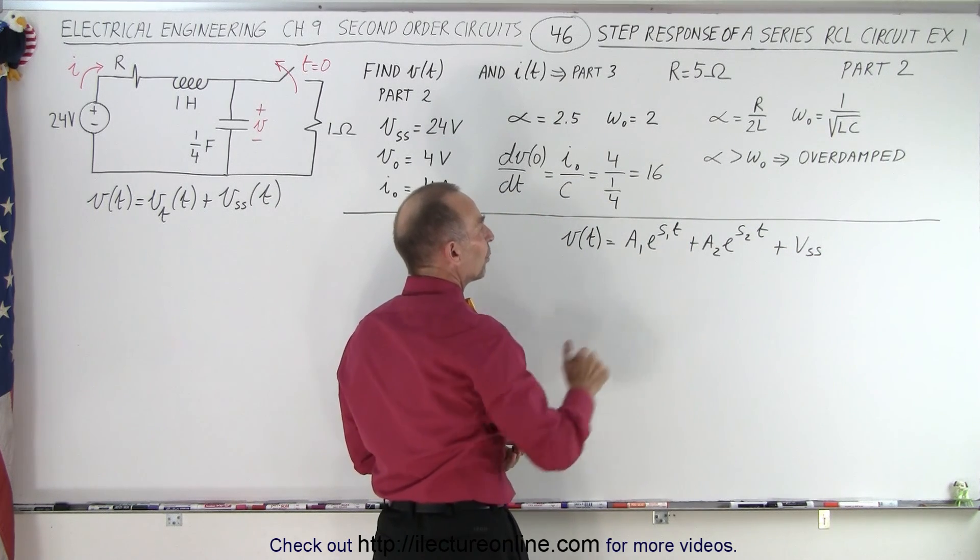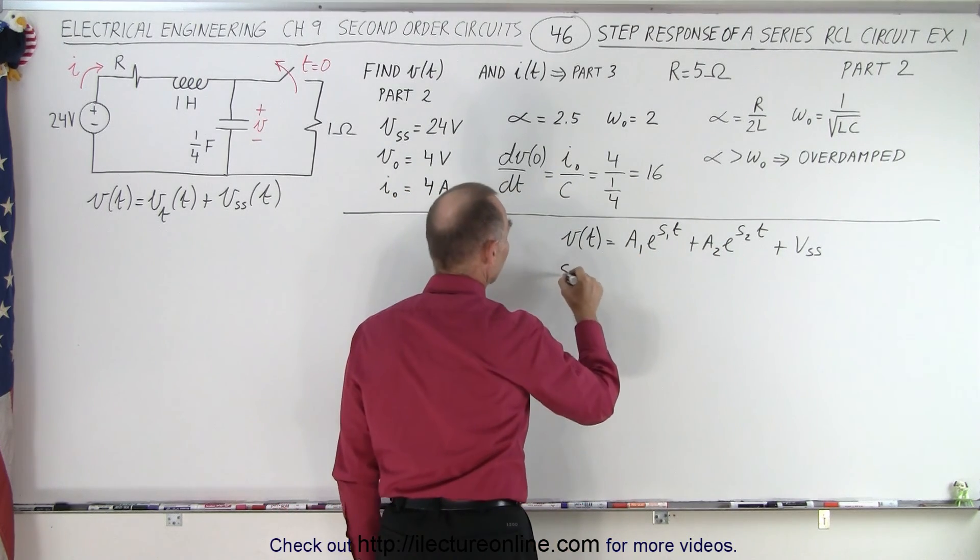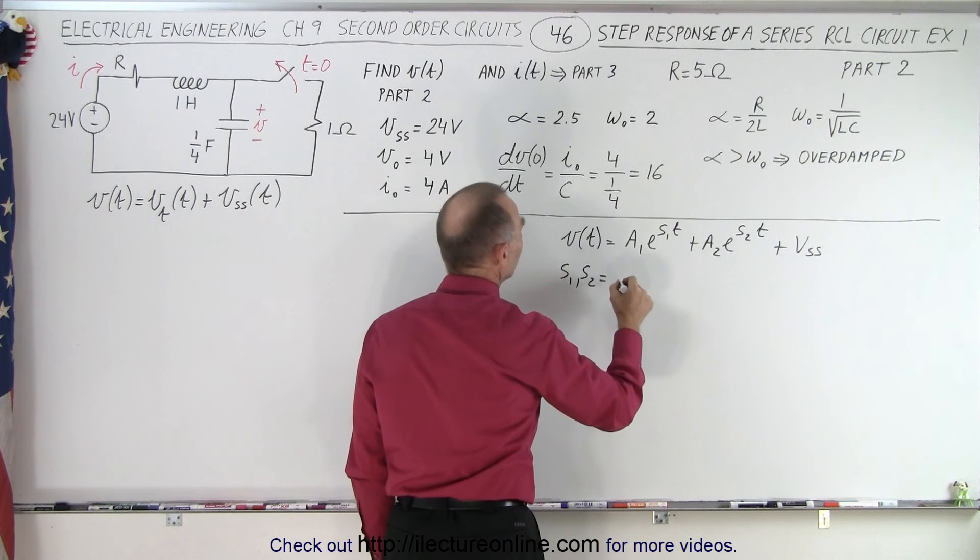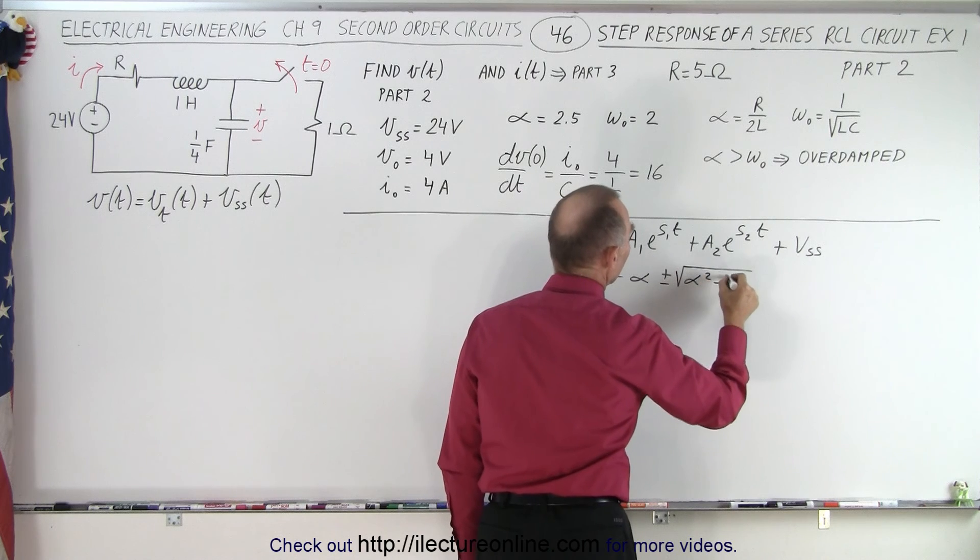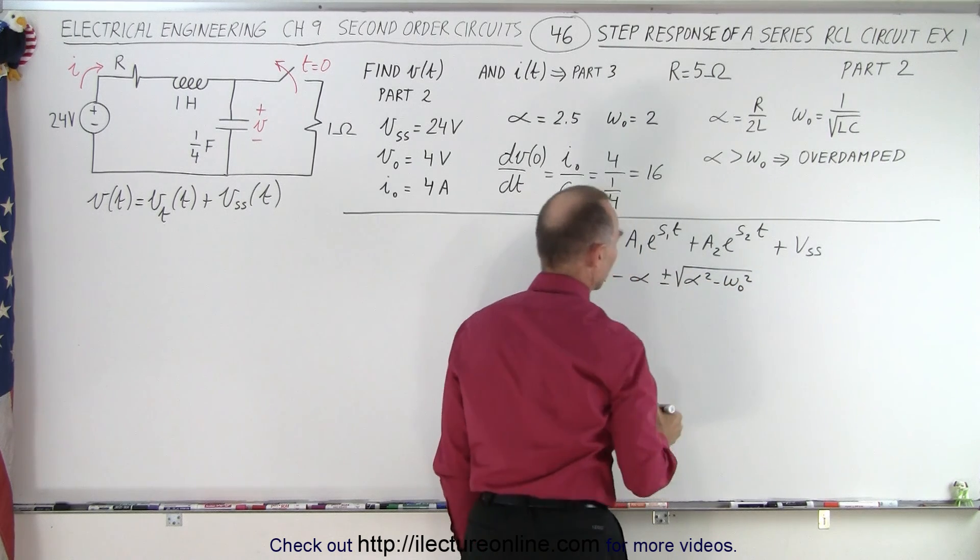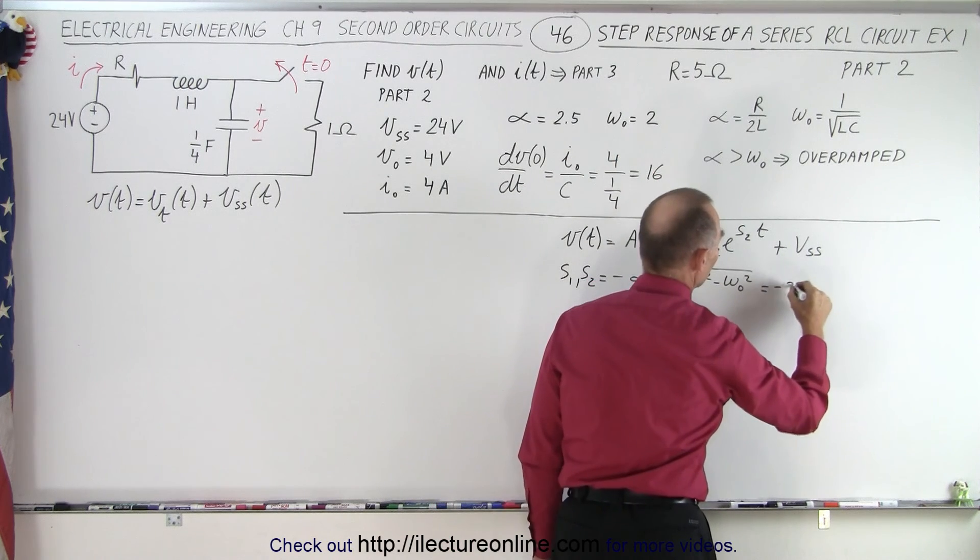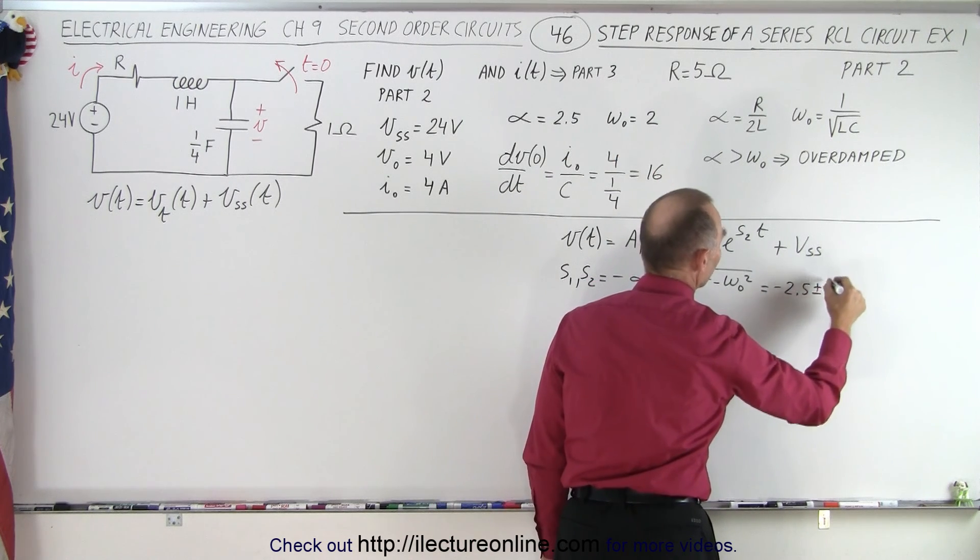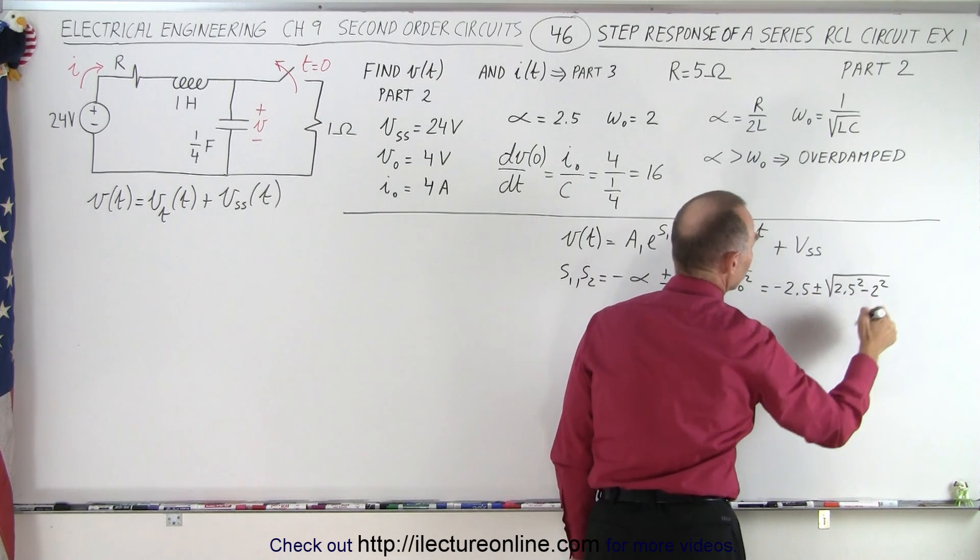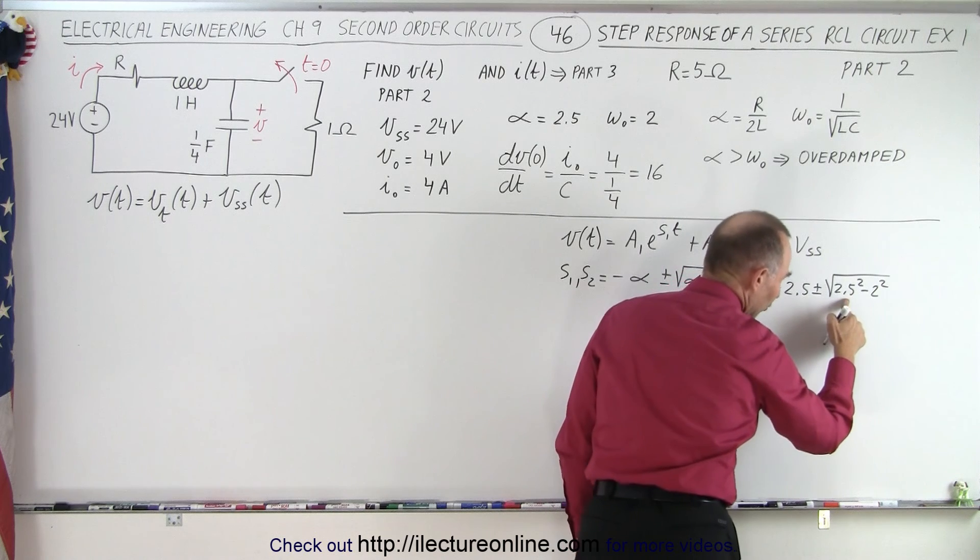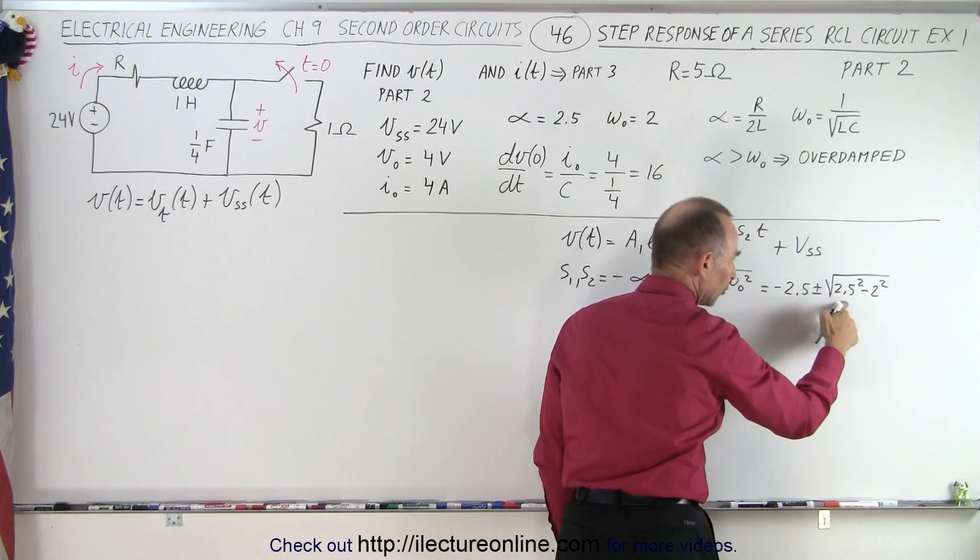And so that means we're going to need to find S1 and S2. We can find S1 and S2 as follows: S1 and S2 is going to be equal to minus alpha plus or minus the square root of alpha squared minus omega sub-naught squared. So in this case, alpha is 2.5, so that's minus 2.5 plus or minus the square root of 2.5 squared minus 2 squared.